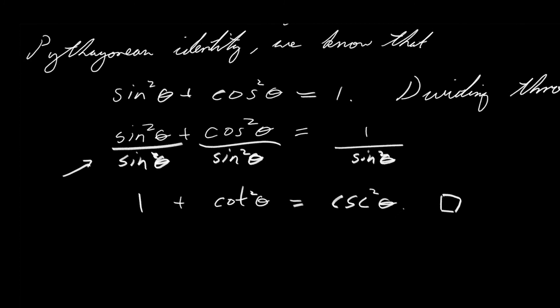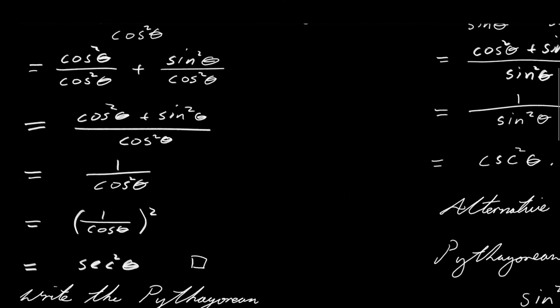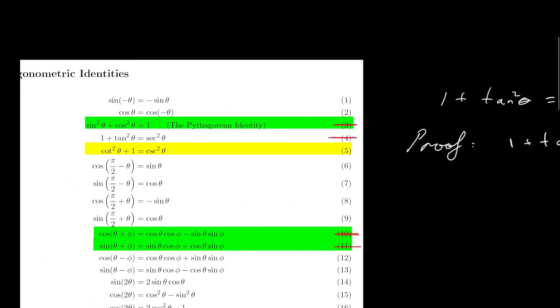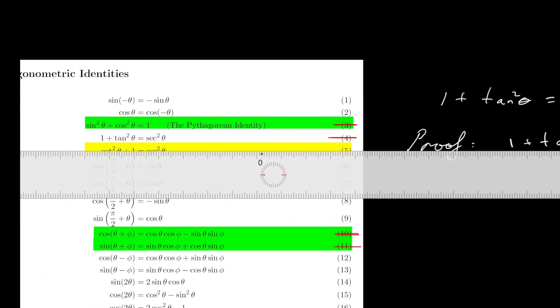Notice that in this alternative proof, all we did was take the Pythagorean identity and divide through by something. So really, this identity is the Pythagorean identity in disguise, just like trigonometric identity 4 is the Pythagorean identity in disguise — because you can also prove that identity from the last video by writing the Pythagorean identity and dividing through on both sides by cosine of theta squared.